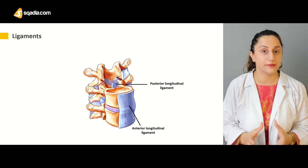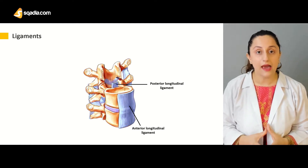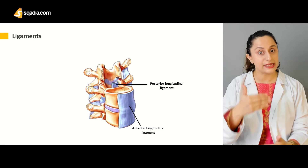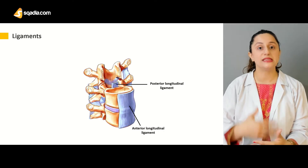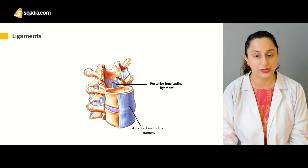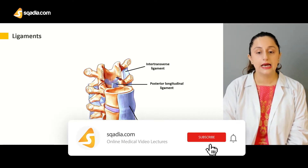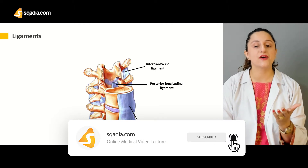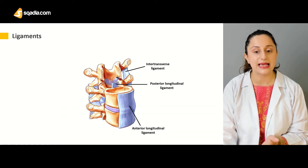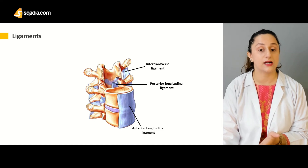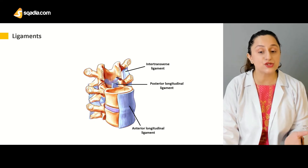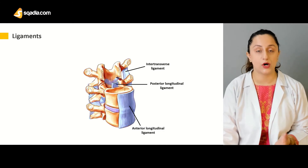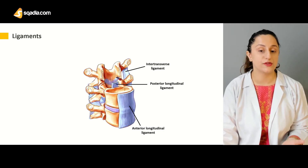These are the major ligaments, and they provide the major stability and connection between the complete vertebral column. Then there are smaller ligaments — for instance, we have the intertransverse ligaments, as you can even see over here. They are attached to the transverse processes of the vertebra.